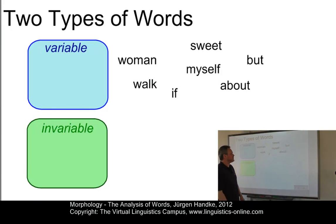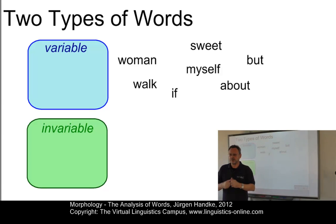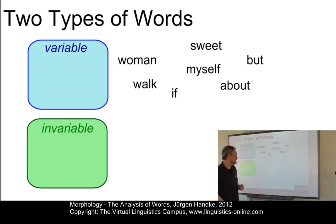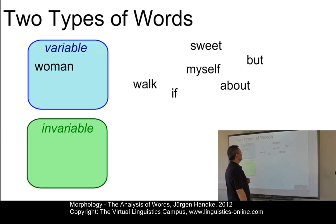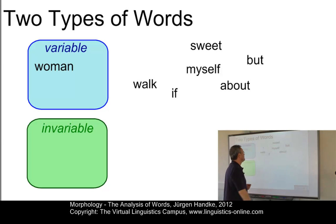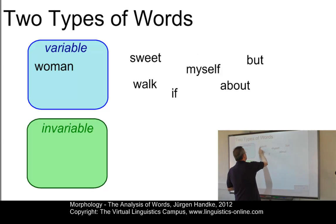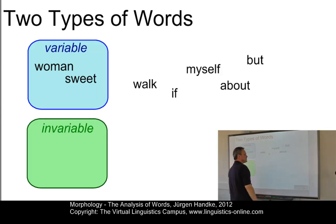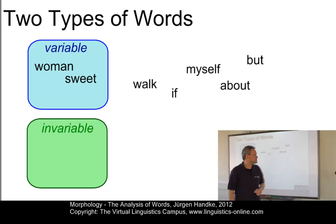Here we have a number of English words that can be grouped into two types: words that can modify their structure — variable words — and words that cannot change at all — invariable words. Woman is a variable word; you can have the genitive women's and the plural women. Sweet is another variable word because you can form the comparative sweeter or the superlative sweetest.